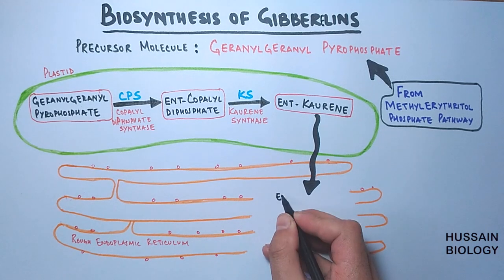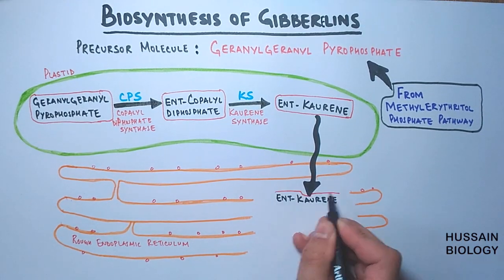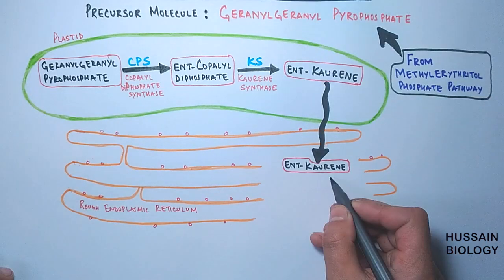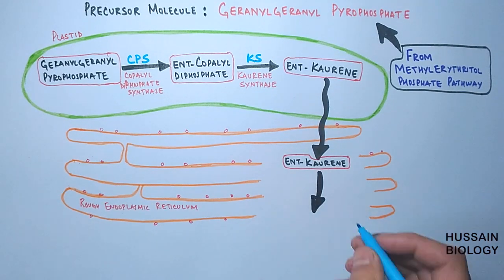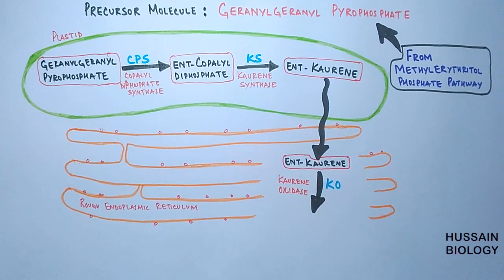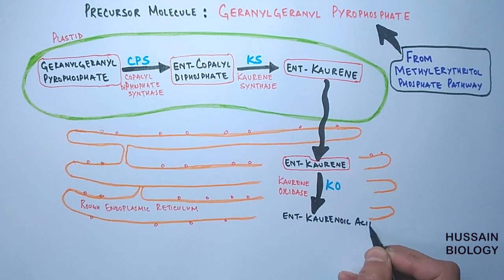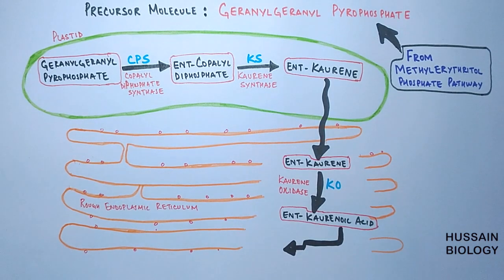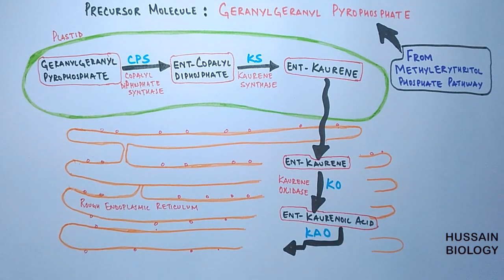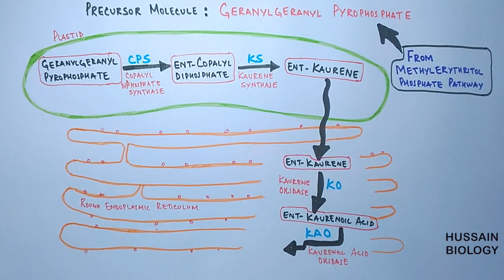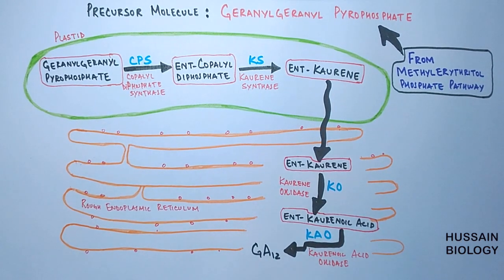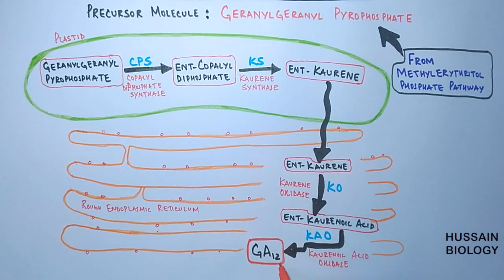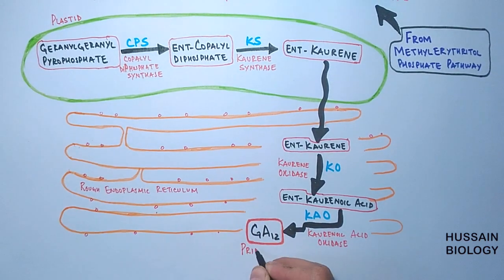The ent-kaurene is transported out of the plastids to the endoplasmic reticulum. Here, ent-kaurene is acted upon by the enzyme kaurene oxidase, and by this enzyme ent-kaurene is oxidized into ent-kaurenoic acid. From this kaurenoic acid we will get the gibberellins. The kaurenoic acid is further oxidized by kaurenoic acid oxidase into gibberellic acid GA₁₂.